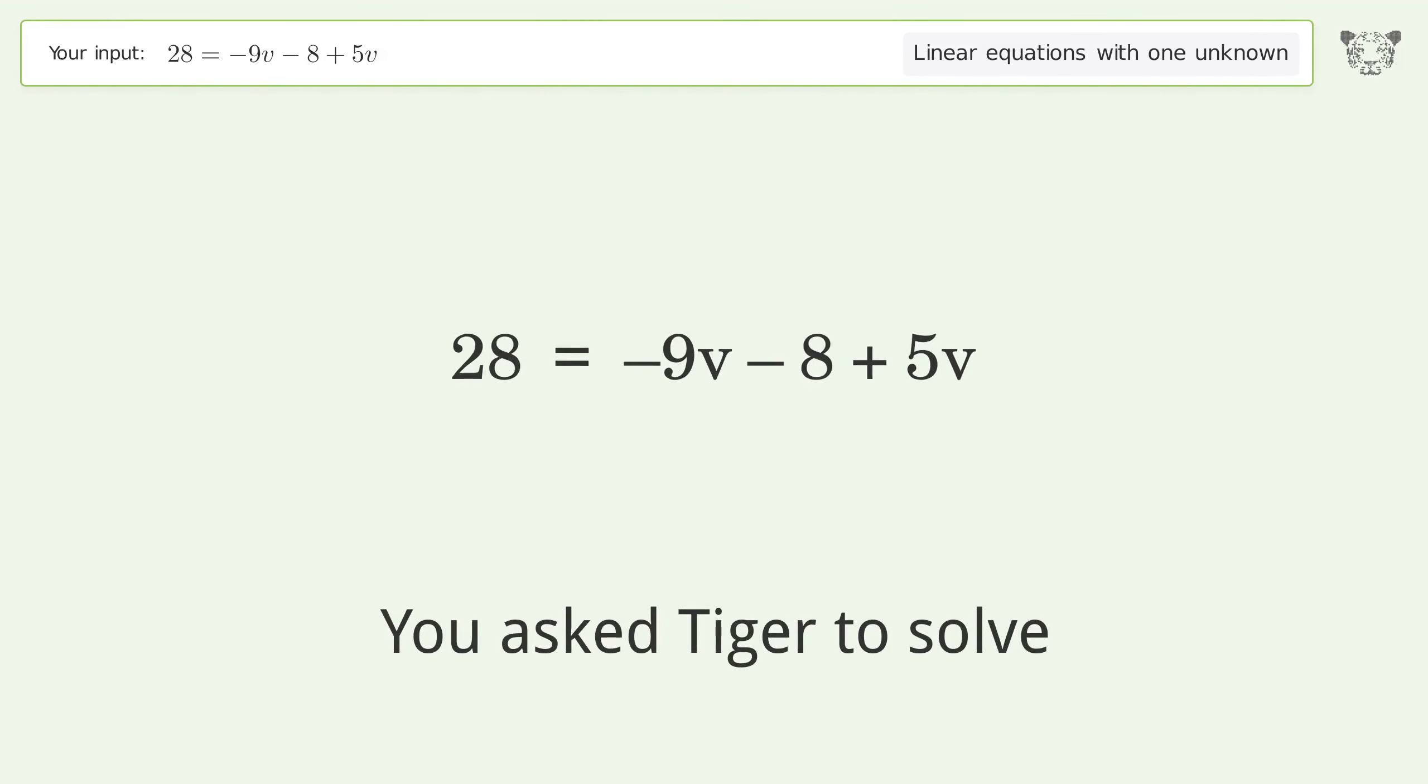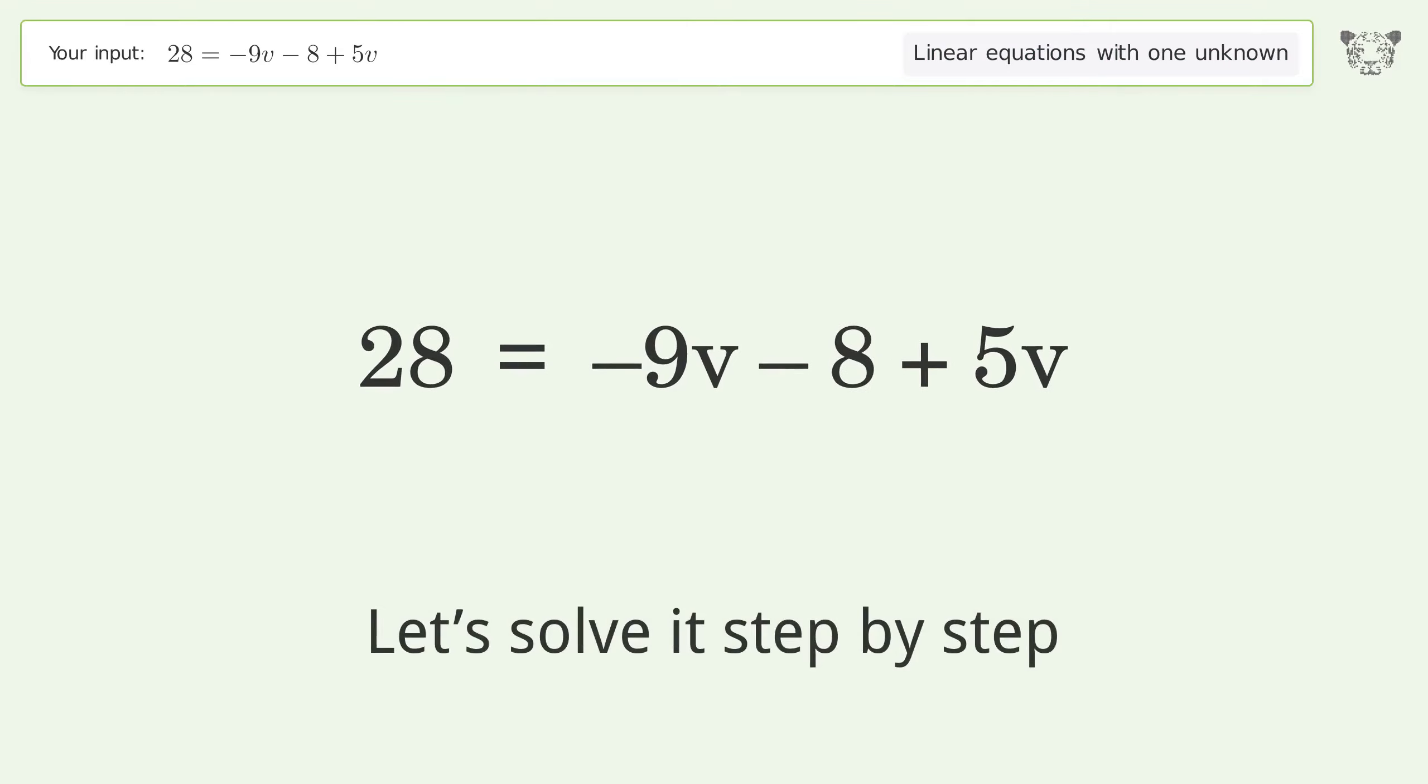You asked Tiger to solve this. This deals with linear equations with one unknown. The final result is v equals negative 9. Let's solve it step by step. Simplify the expression, group like terms.